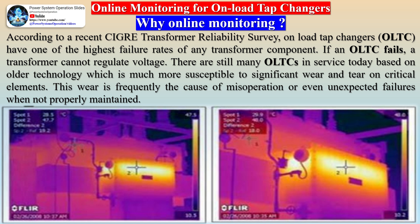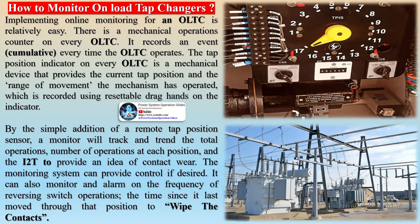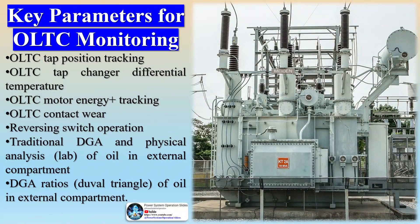The tap position indicator on every OLTC is a mechanical device that provides the current tap position and the range of movement, recorded using resettable drag hands on the indicator. By the simple addition of a remote tap position sensor, a monitor will track total operations, number of operations at each position, and I²t to provide an idea of contact wear. The monitoring system can also alarm on frequency of reversing switch operations and time since it last moved through a position. Key parameters for OLTC monitoring include: tap position tracking, differential temperature, motor energy tracking, contact wear, reversing switch operations, DGA ratios, and Duval triangle analysis of oil in the external compartment.